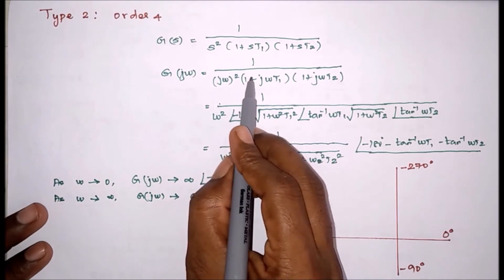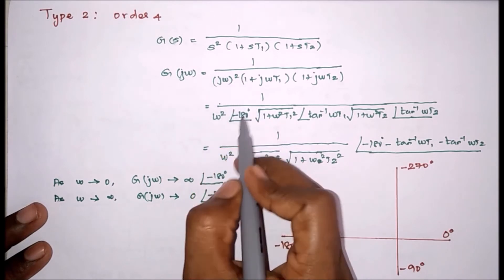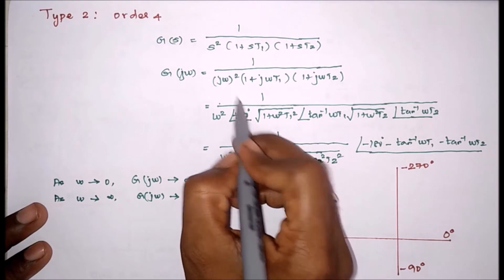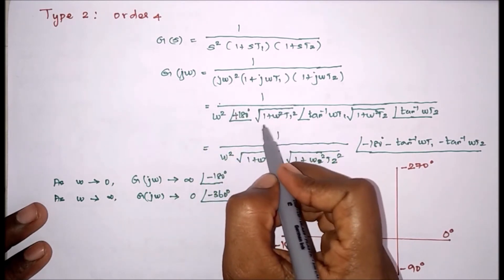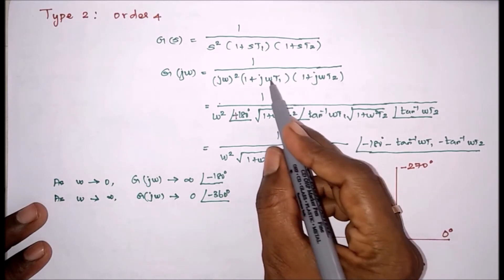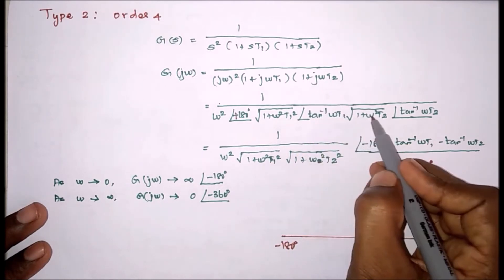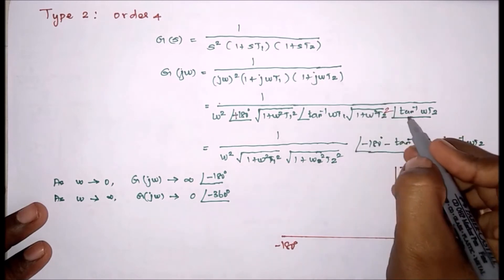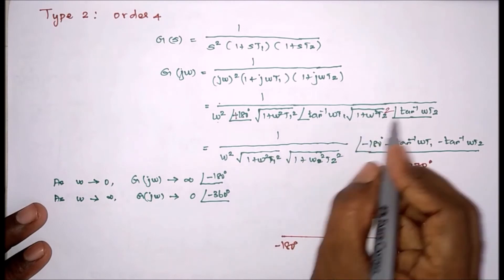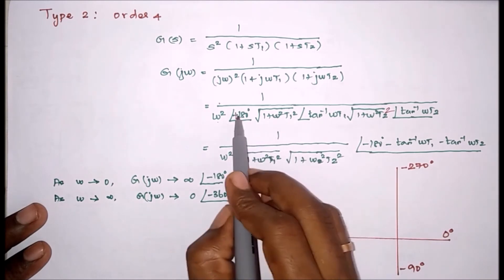Now we find the angle and magnitude for each term. For ω², the angle is 180° and since it is in the denominator it contributes +180°; the magnitude is ω². For the next term, magnitude = √(1 + ω²T₁²) and angle = tan⁻¹(ωT₁). For the following term, magnitude = √(1 + ω²T₂²) and angle = tan⁻¹(ωT₂). Separating magnitude and angle: magnitude = 1/(ω² × √(1+ω²T₁²) × √(1+ω²T₂²)).